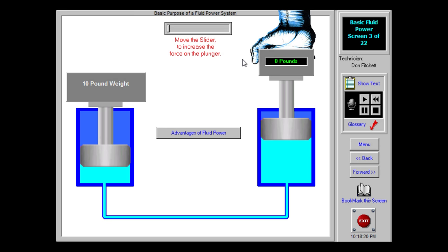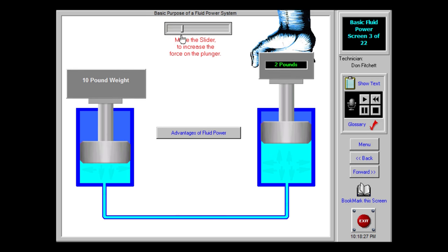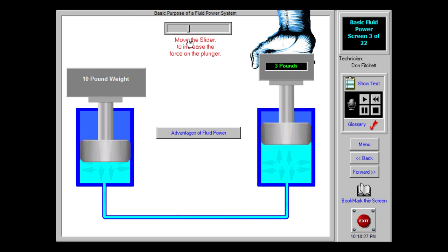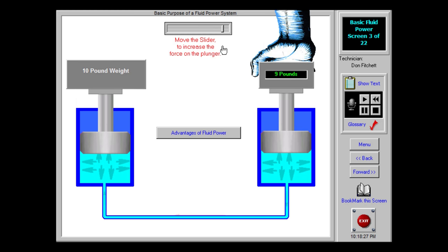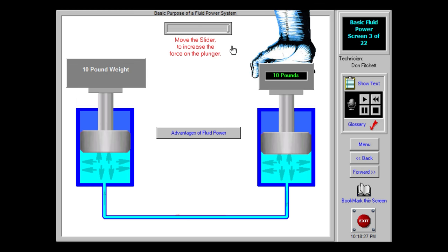The basic purpose of a fluid power system is to transmit power from an input location through piping to an output location. Power input to a fluid system is nearly always mechanical power converted into fluid power. This example shows a hand-operated input piston, converting mechanical power into fluid power.